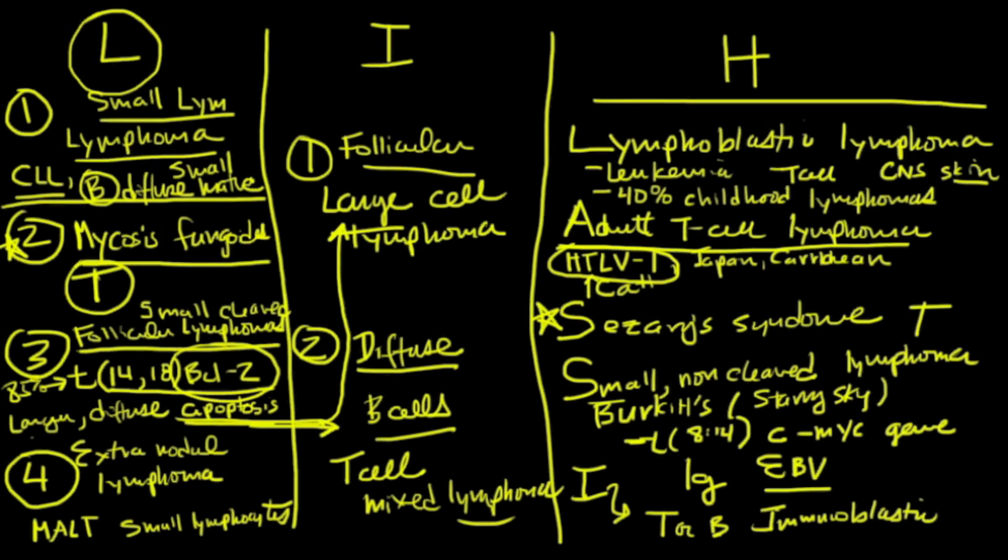You've got the low grade, the intermediate grade, the high grade. Remember the things that make it low grade and high grade. So we're talking about whether or not it's cleaved or non-cleaved, small or large, mature or immature, follicles or diffuse. I think the things that they would test you on here is knowing these translocations because they are very key to test.